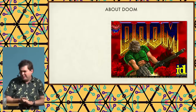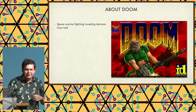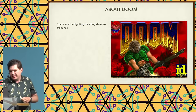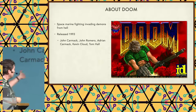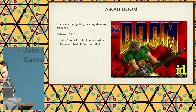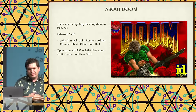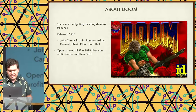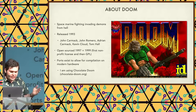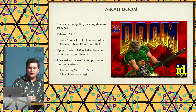Doom — classic first-person shooter, space marine fighting invading demons from hell, released 1993. The initial team was only a handful of people, John Carmack being one of the main folks behind it. It was open-sourced in 1997 under a non-profit license, and then open-sourced under GPL in 1999. There are a bunch of ports. I'm using Chocolate Doom, which is a port that intends to be very true to the original game.